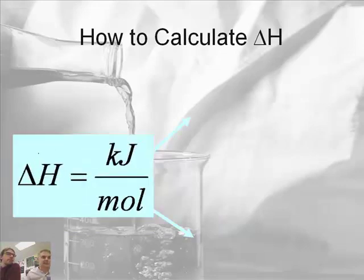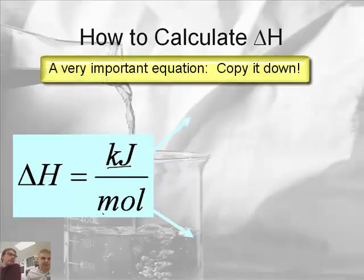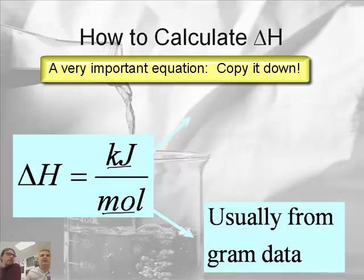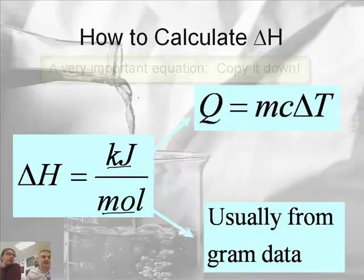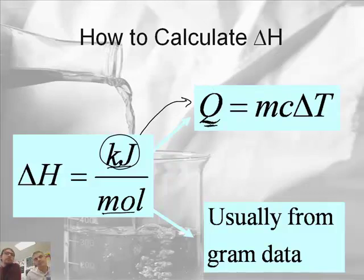First, understand that the units for delta H are kilojoules divided by moles. To do this, you'll get numbers from two different places. To find kilojoules, use the equation Q equals mc delta T, where Q is your joules. You'll actually get joules, so you'll need to convert to kilojoules by dividing by a thousand.